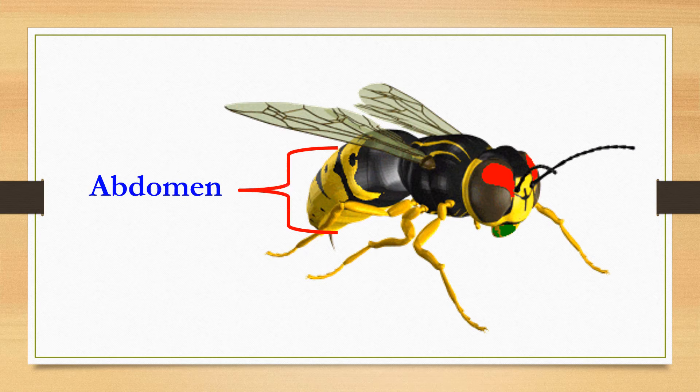Abdomen: the abdomen is the last part of the insect body. The abdomen of most insects has clear segmentation.